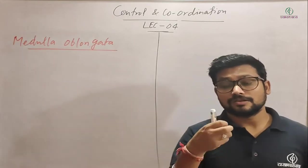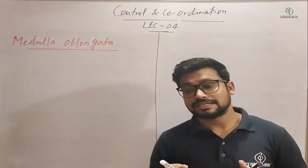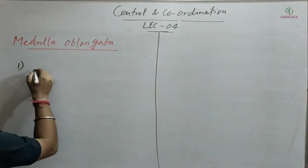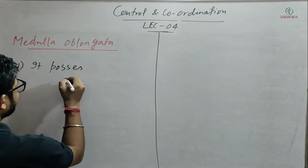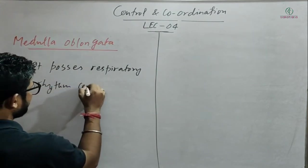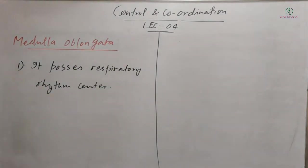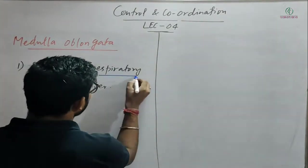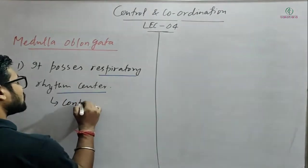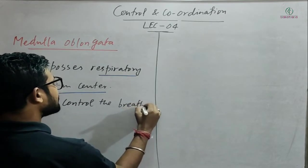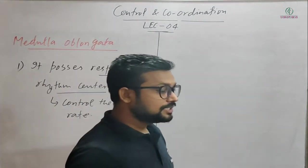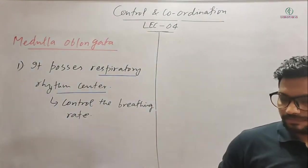The first center of medulla oblongata is the respiratory rhythm center. Just like pons has the pneumotaxic center, medulla oblongata has the respiratory rhythm center. The role of this respiratory rhythm center is to control the rhythm of breathing — to control the breathing rate. If breathing rate increases or decreases, it controls that.